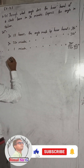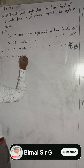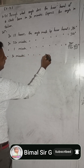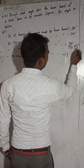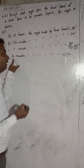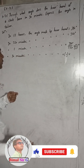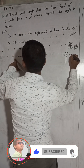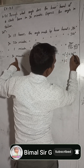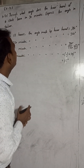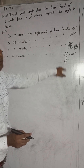Now we have to find the angle in 30 minutes. So in 30 minutes, the angle made by the hour hand is equal to 1/2 degree multiplied by 30. Because in one minute there is half a degree, in 30 minutes there will be more degrees, so we multiply. This gives us 15 degrees.